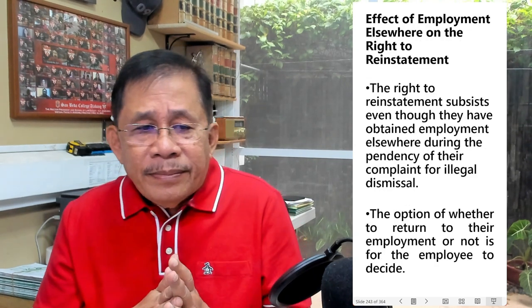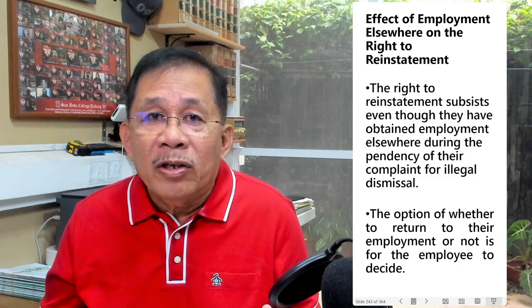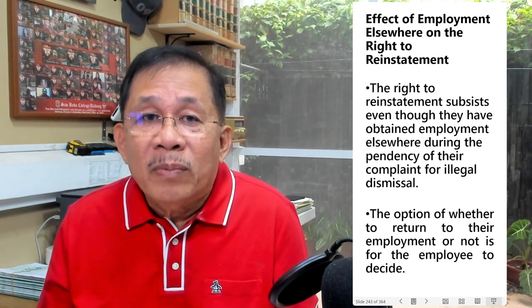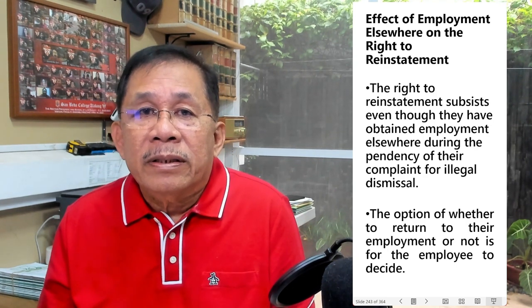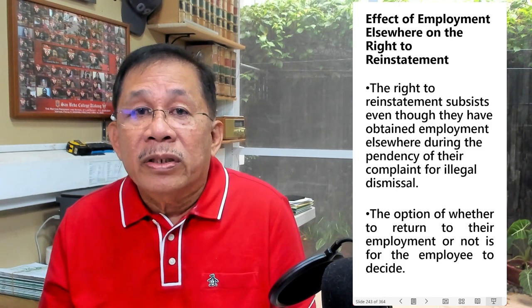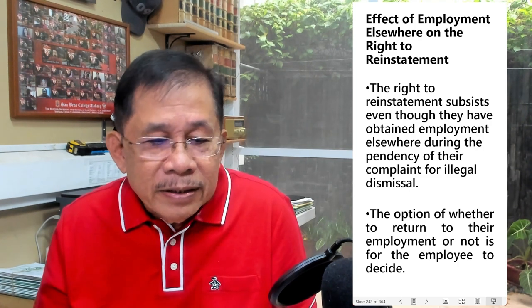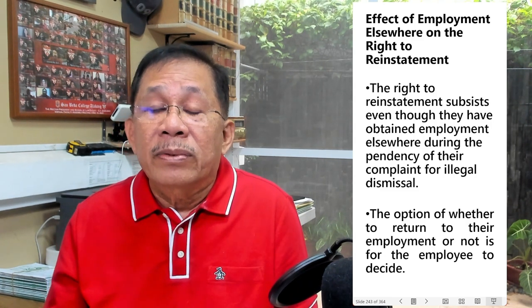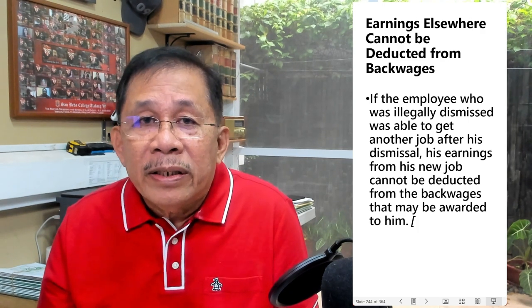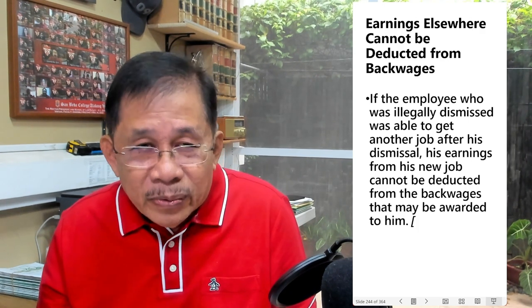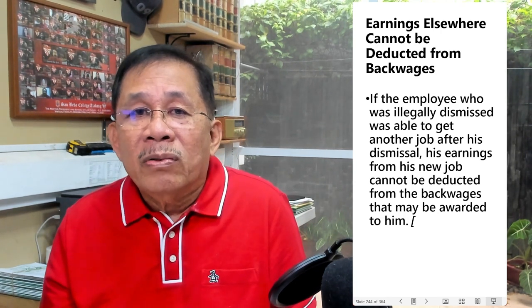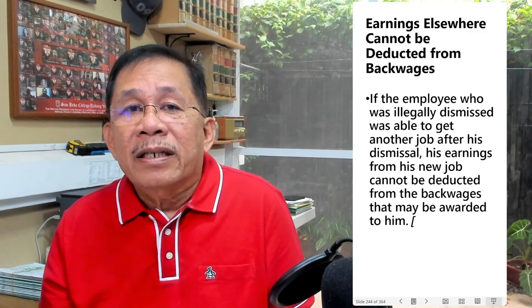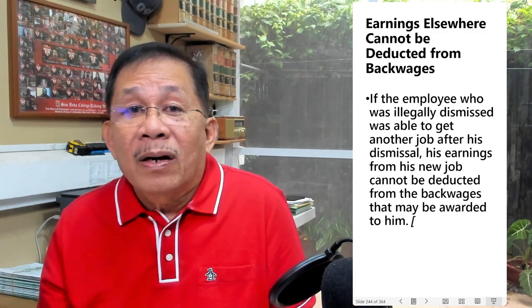Suppose the employee was able to obtain employment elsewhere — what is the effect on the right to reinstatement? The right to reinstatement of employees adjudged to have been illegally dismissed subsists even though they have obtained employment elsewhere during the pendency of the complaint for illegal dismissal. The option on whether to return to their employment or not is for the employee to decide. Earnings from employment elsewhere cannot be deducted from the back wages.